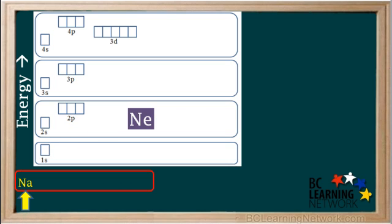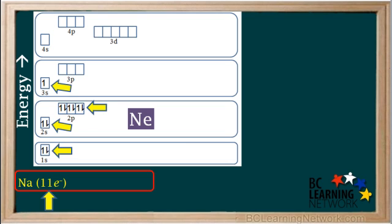Now we'll look at element number 11, sodium. It has 11 electrons, which occupy orbitals like this, and gives us the configuration of 1s2, 2s2, 2p6, 3s1.